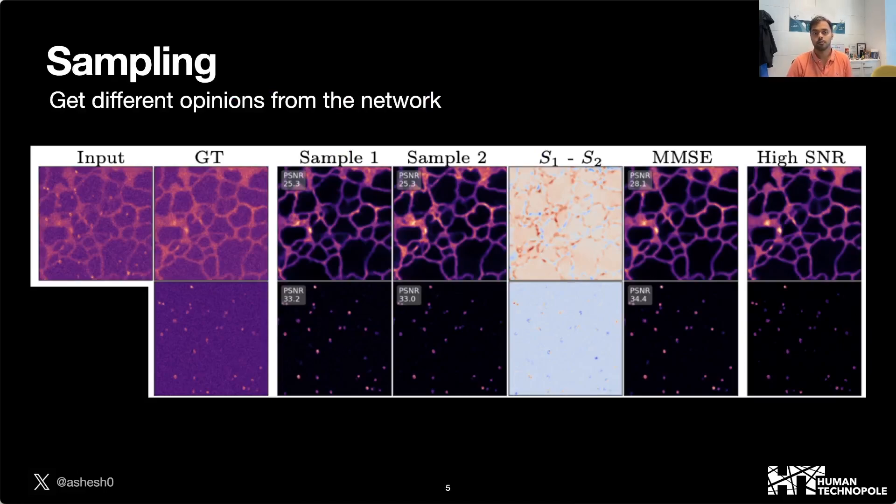We inherit the property of sampling from the HVAE framework that we build upon. Here we show one example where we have this input—from this input we predict two samples, and we also show the difference between the two samples in the next column, S1 minus S2.